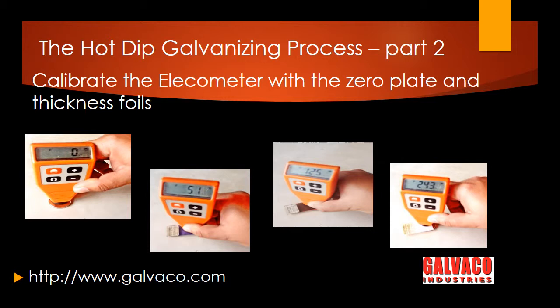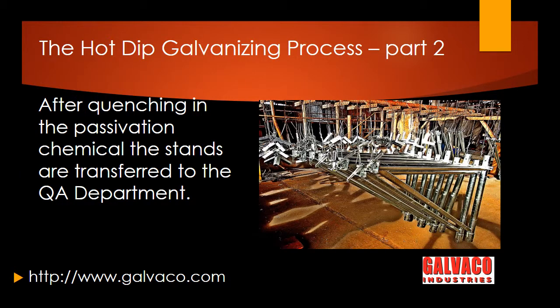Before taking any readings, calibrate the Alchometer by placing it on top of the zero plate and check the reading. Adjust if necessary to read zero. Then insert the blue foil on top of the zero plate and check the reading again — it should read 50 microns. Repeat this process with the brown foil of 125 microns, followed by the white colored foil at 250 microns. This completes the calibration, and the gauge is now ready for coating thickness measurement.